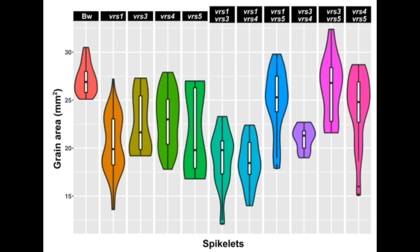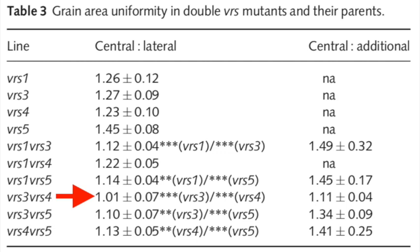In another two-row variety, we also see that the grain uniformity problem is addressed. Normally you see quite large central grains and small lateral grains, but in the double mutant those grains are now indistinguishable — when you do grain parameter analysis, they're all the same size. They're smaller overall, but they're uniform. My hunch is that something very early in spikelet development is causing lateral spikelets to develop more like central spikelets — potentially in terms of vascular strands — and that competition between spikelets may be different, leading to better resource sharing.